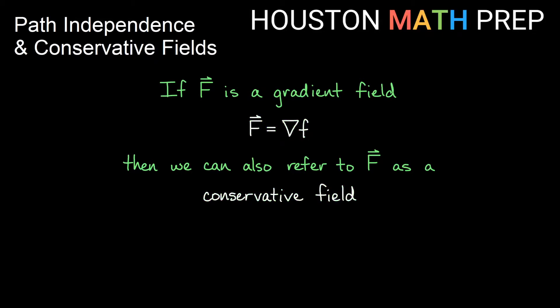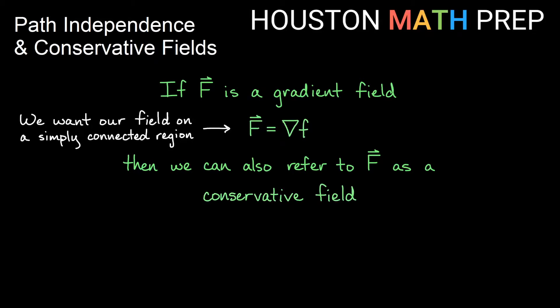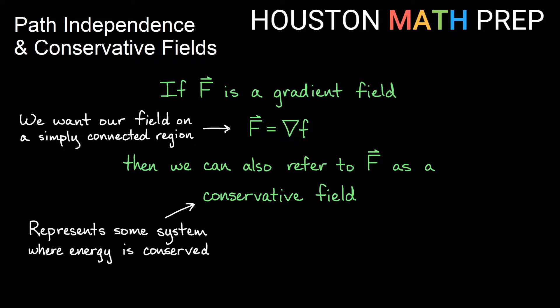When we're using these shortcuts we just want to assume some really basic things: that partial derivatives are defined and that our field is on some simply connected region — that we don't have some region with a bunch of holes in it. A conservative field really means it represents some system where energy is conserved, rather than just a mathematical gradient with respect to x and y.